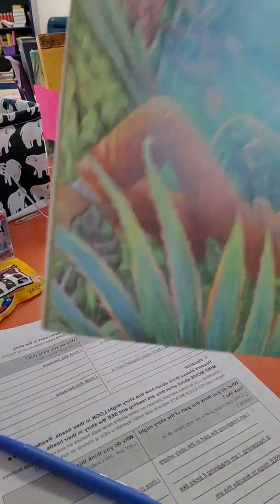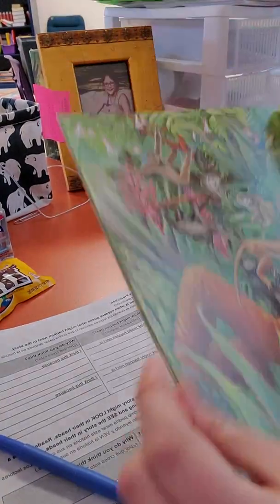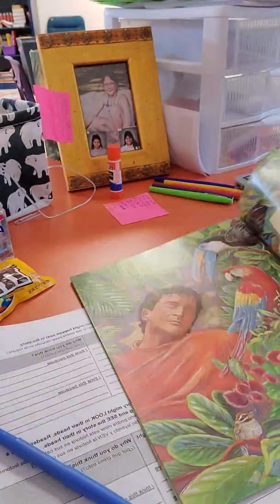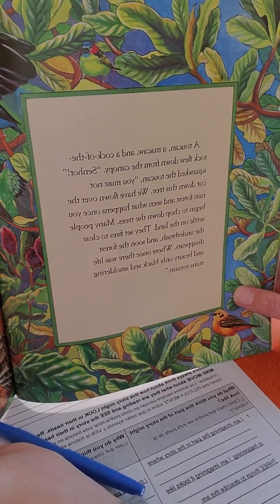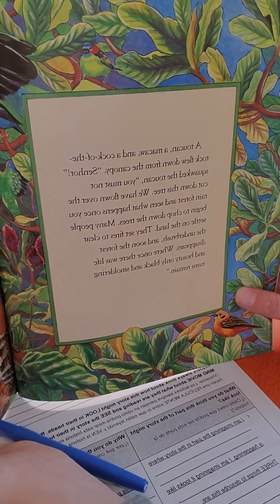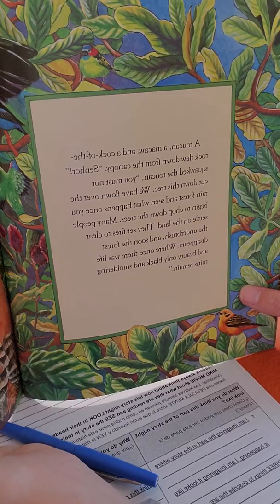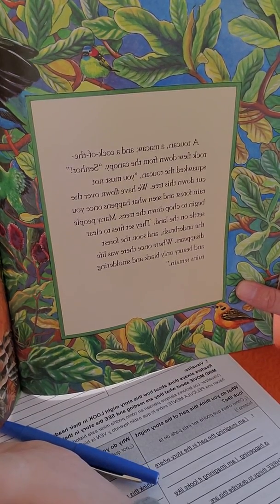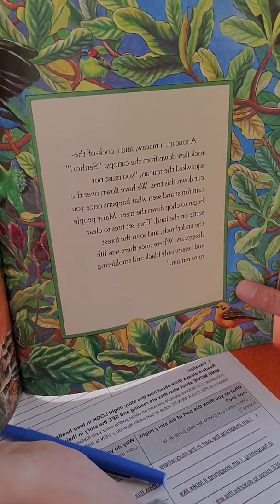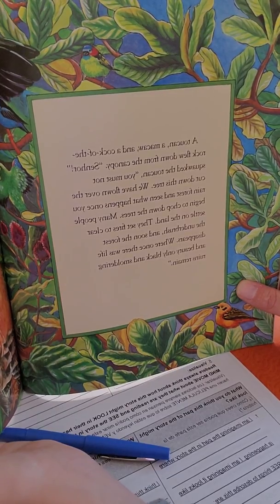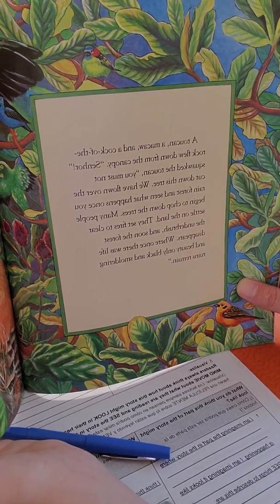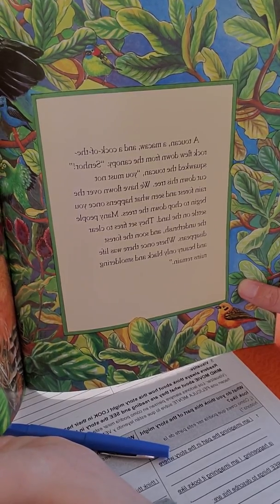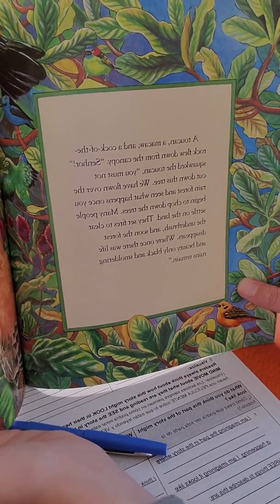Alright, let's go ahead and keep on reading. A toucan, a macaw, and a cock of the rock flew down from the canopy. Senor, squawked the toucan. You must not cut down this tree. We have flown over the rainforest and seen what happens once you begin to chop down the trees. Many people settle on the land. They set fires to clear the underbrush, and soon the forest disappears. Where once there was life and beauty, only black and smoldering ruins remain.